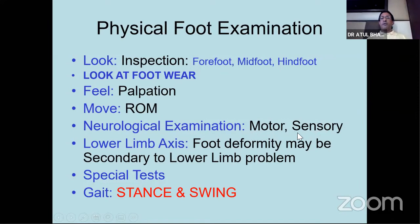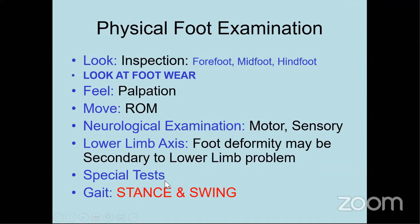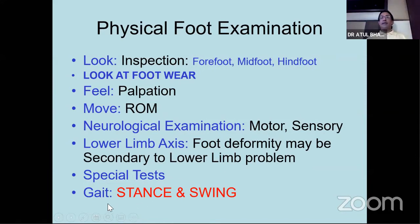This is important for myelomeningocele and neuromuscular foot, where you should know the dermatomes where there is loss of sensation - L4, L5, S1, and S2 dermatomes, which basically supply from the medial to the lateral side of the foot. Look at the lower limb axis - you can see the child in weight bearing position, whether there is any genu valgum or genu varum, and whether the foot deformity is secondary to a lower limb malalignment problem. Always examine the gait of the child - both in stance as well as the swing phase.